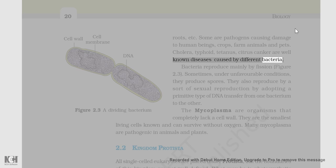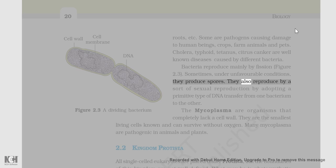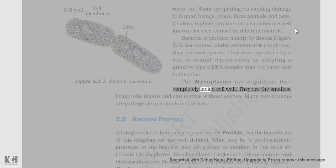Bacteria reproduce mainly by fission (Figure 2.3). Sometimes, under unfavorable conditions, they produce spores. They also reproduce by a sort of sexual reproduction by adopting a primitive type of DNA transfer from one bacterium to the other. The mycoplasma are organisms that completely lack a cell wall. They are the smallest living cells known and can survive without oxygen. Many mycoplasma are pathogenic in animals and plants.